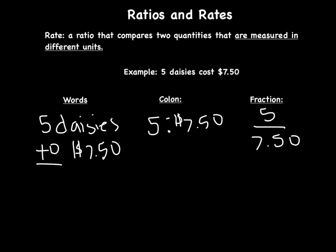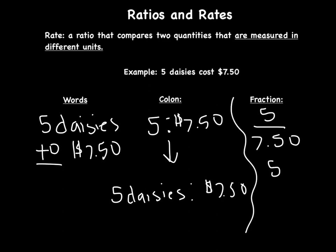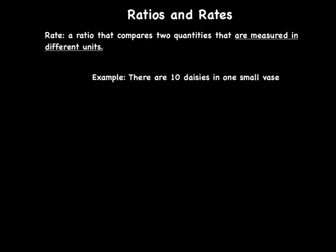Another way to write this — especially as you get started — is to write out the words in the fraction: 'five daisies over $7.50,' so you remember which unit goes on top. Here's another rate: we're comparing 10 daisies to one small vase. Daisies and a vase are two different units, so this is a rate.